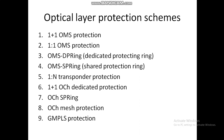The fourth scheme is OMS SPRing, which stands for Shared Protection Ring. It is analogous to SONET BLSR 4, with some changes. The fifth scheme is 1:N Transponder Protection. The transponder may be protected in a 1:N configuration by having one spare transponder for every N working transponders.